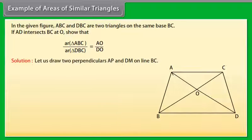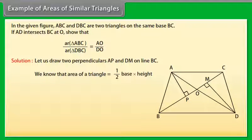Solution. Let us draw two perpendiculars AP and DM on line BC. We know that area of a triangle is equal to 1 by 2 into base into height.